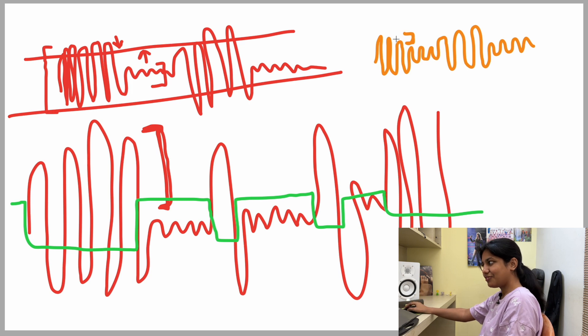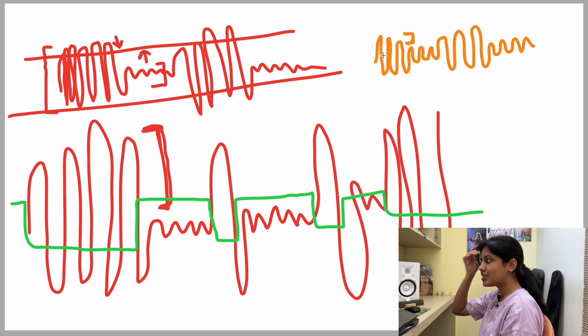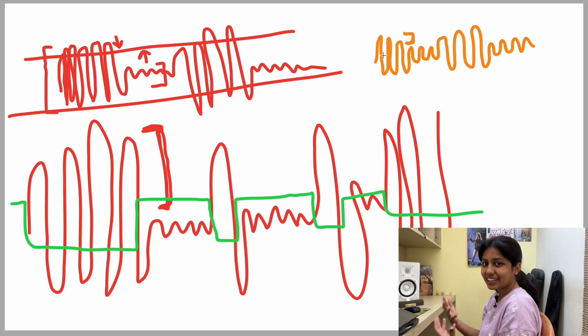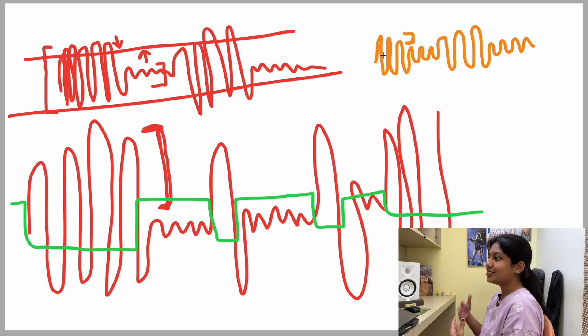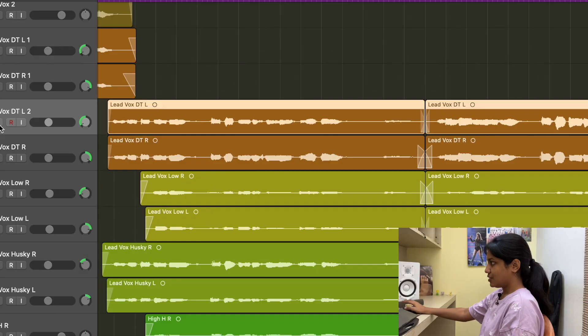This time, look at the dynamic difference — it's not a lot, and that is good for your track. When you put a compressor on it now, it works in an even smoother manner and won't sound overly processed. So that is what we're going to learn today, and there are several ways by which you can do this automation.